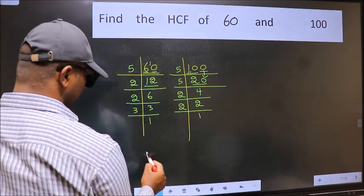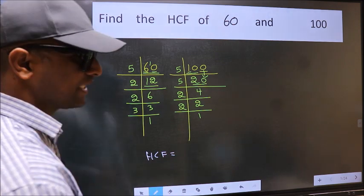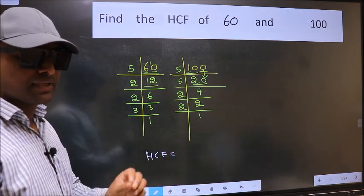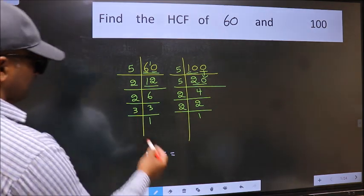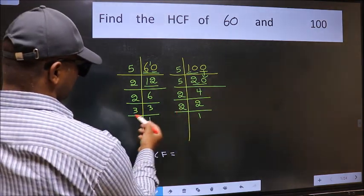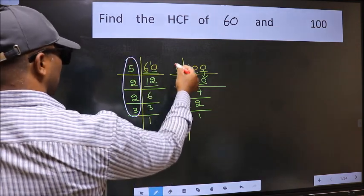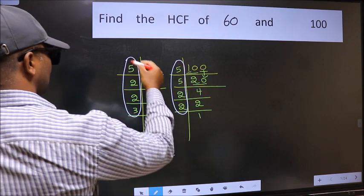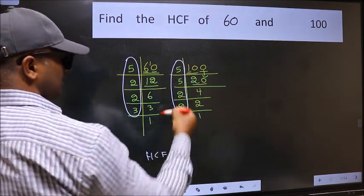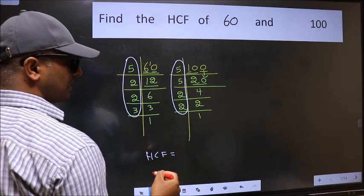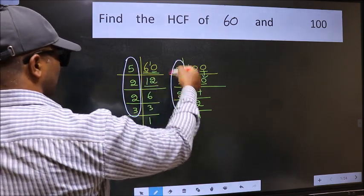Therefore, our HCF is the product of the numbers which should be present in both places. That is here and also here. Here and also here. So now let us find the numbers which should be present here and also here.